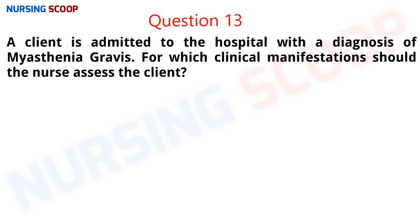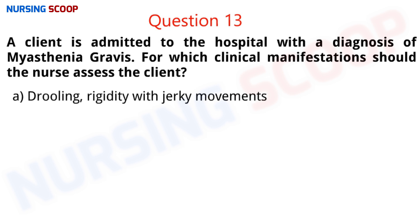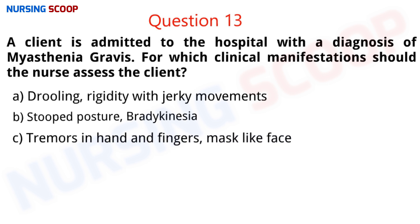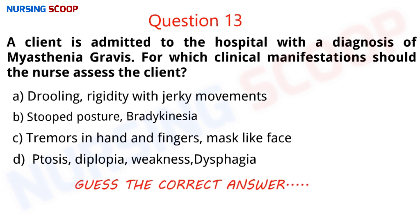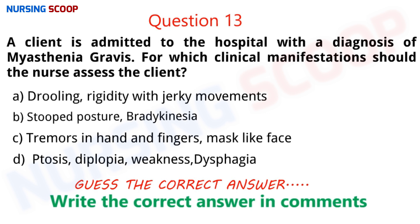Moving to question number 13 — this question is for you. A client is admitted to the hospital with a diagnosis of myasthenia gravis. For which clinical manifestation should the nurse assess the client? Option A is drooling and rigidity with jerky movements. Option B is stooped posture and bradykinesia. Option C is tremors in hand and fingers and mask-like face. Option D is ptosis, diplopia, weakness, and dysphagia. Pause the video and put your answers in the comments.